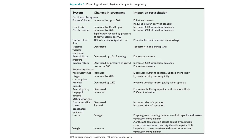Physiological and physical changes in pregnancy: for the cardiovascular system, plasma volume increases by up to 50%, heart rate increases by 15 to 20 beats per minute, cardiac output increases by 40%, and uterine blood flow is 10% of cardiac output at term. Systemic vascular resistance and arterial blood pressure are decreased. For the respiratory system, respiratory rate and oxygen consumption are increased (oxygen consumption by 20%), residual capacity is decreased by 25%, arterial CO2 is decreased, and laryngeal oedema is increased. Other changes include decreased gastric motility, relaxed lower oesophageal sphincter, and an enlarged, heavier uterus.